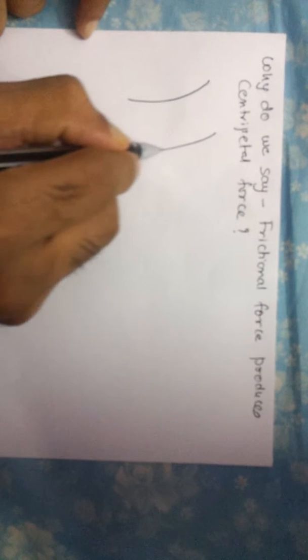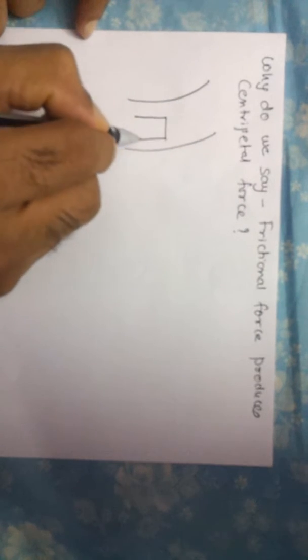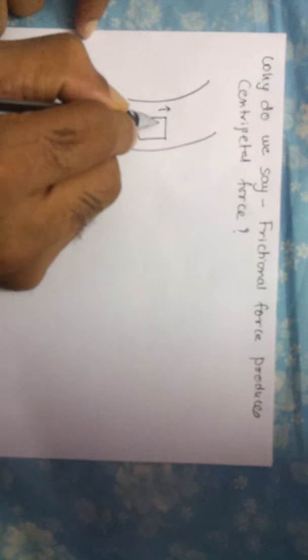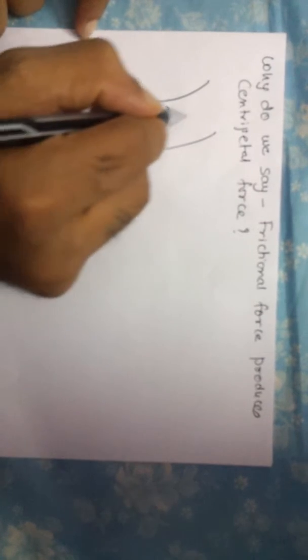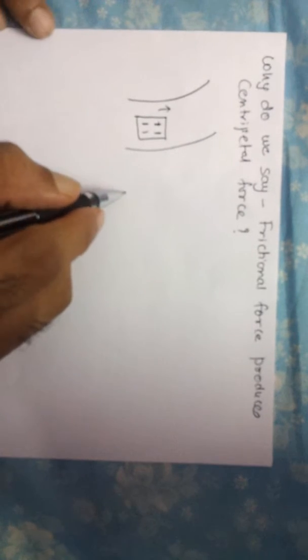Let's say this is a road, and there is a vehicle moving in this direction. These are the wheels of the vehicle, and it is taking a turn and moving along this road.